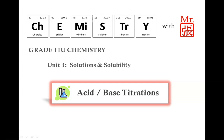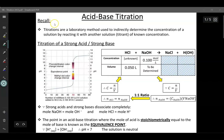In this video tutorial, we will introduce acid-base titrations. Titrations are a laboratory method used to indirectly determine the concentration of a solution by reacting with another solution, also known as a titrant, of a known concentration.